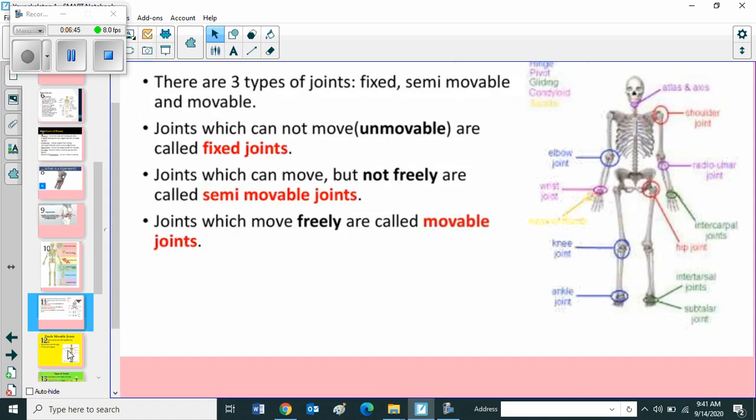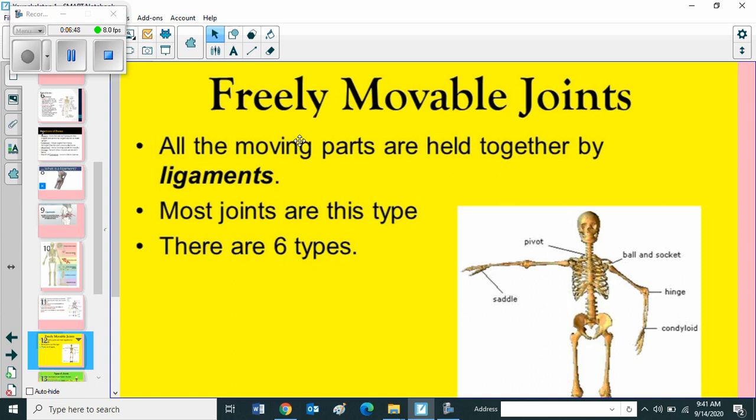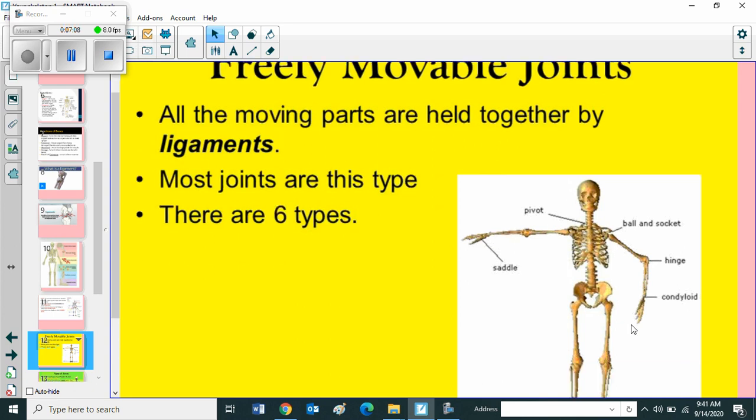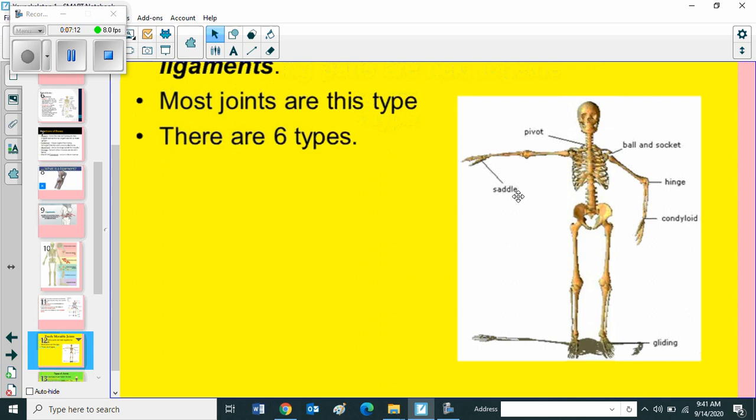We can go through next slide. First we can go through freely movable joints. All the moving parts are held together by ligaments. Most joints are this type. There are six types. Most all the moving parts are held together by ligaments. And most joints are this freely movable types. There are six types. You can see here. Saddle, pivot, ball and socket, hinge, condyloid, gliding. So these are the six types.